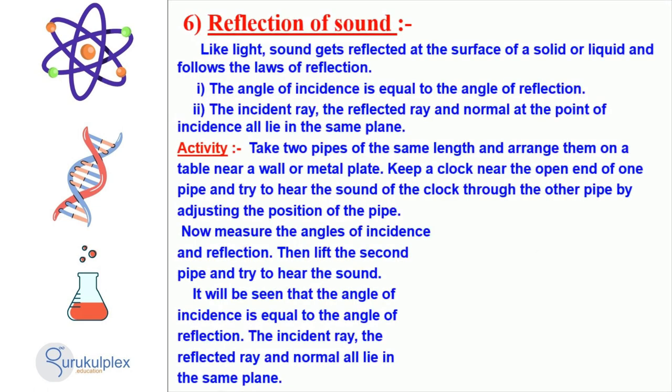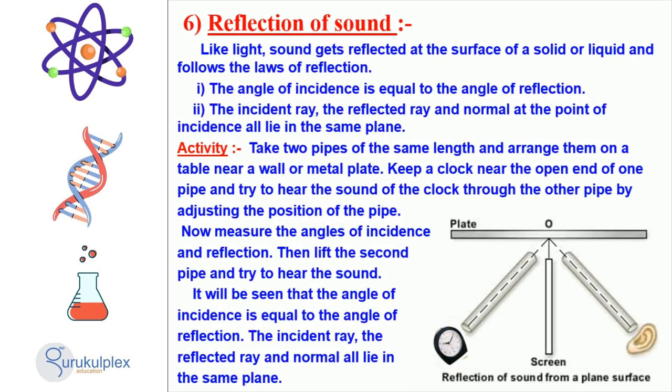When a sound wave hits a solid or liquid surface, it is reflected in a manner similarly to light, with the angle of the reflected wave being equal to the angle of the incident wave. To experiment with this theory, take two pipes of the same length. Place one end of the pipe near a wall or metal plate, and place a clock near the open end. Place the other pipe near the clock until you can hear the sound. Measure the angle of incidence and reflection, you will find that they are both equal. As you raise up the pipe, the sound will become quieter and eventually disappear.